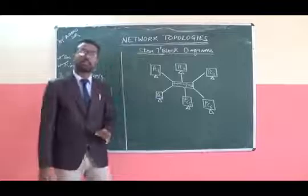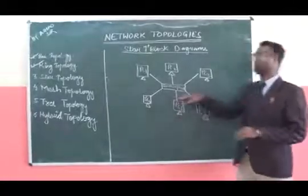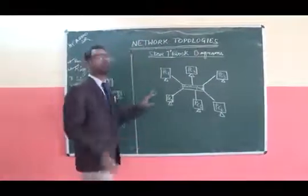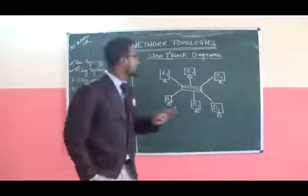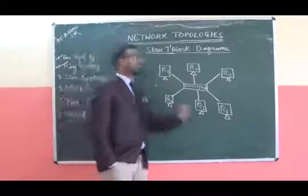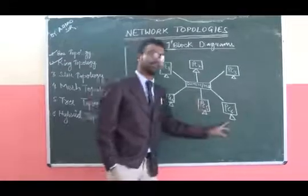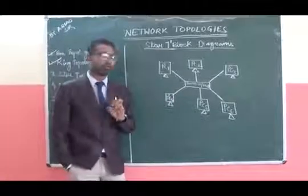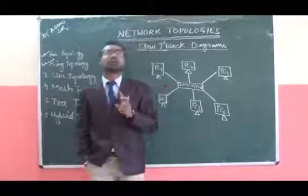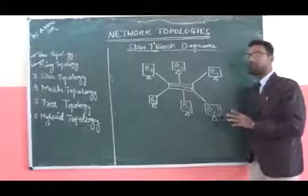In star topology, we are going to talk about how computers are connected with the help of one switch or hub. This is the most feasible and very common type of network topology where every PC is connected to every other single PC. For example, if PC1 wants to share or send some message to PC6, it is very easy through this type of topology. Unlike ring topology where one PC had a link to only two other PCs, here it is not limited in that way.